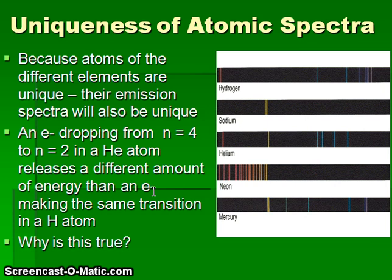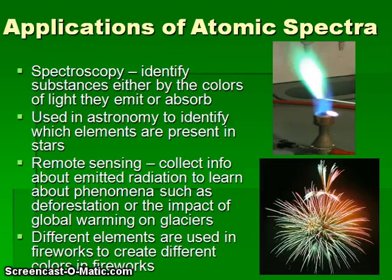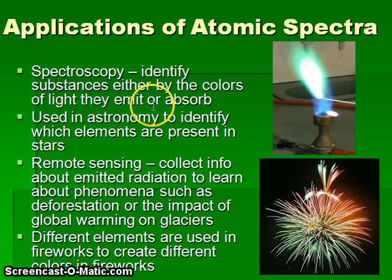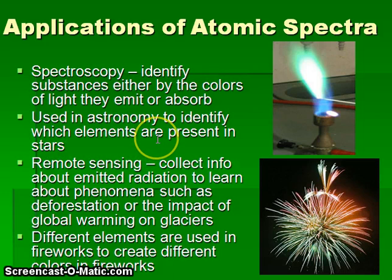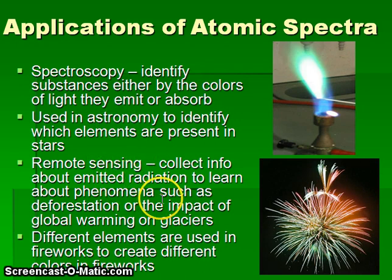A hydrogen nucleus contains just a proton, while a helium nucleus contains two protons and two neutrons. There are a number of important applications of atomic spectra. We use spectroscopy to identify substances by the colors of light they either emit or absorb — in class we'll be doing a flame testing lab to observe this. Atomic spectra are also used in astronomy to identify which elements are present in stars, and for remote sensing to collect information about phenomena like deforestation or the impact of global warming on glaciers.